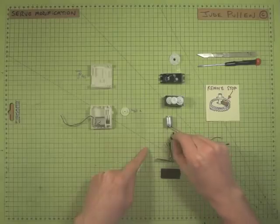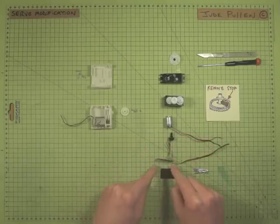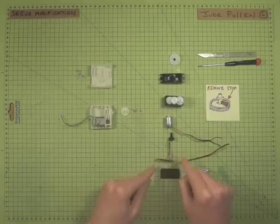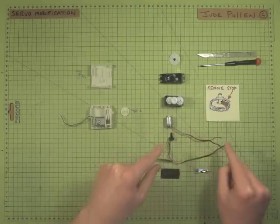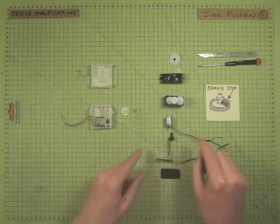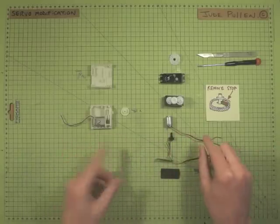And you'll probably need to remove the circuit board as well. Basically, once you've got this motor out, you can solder a red and a black wire, positive and negative.